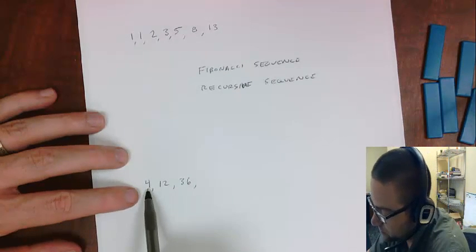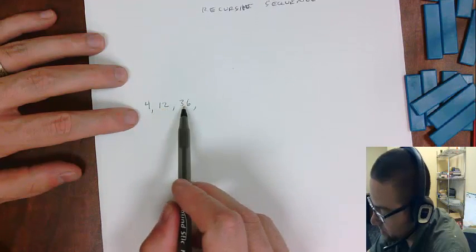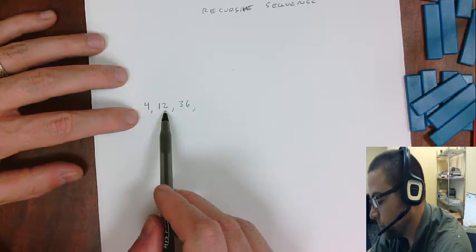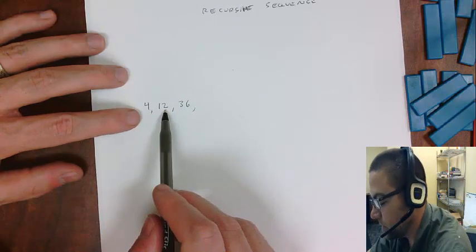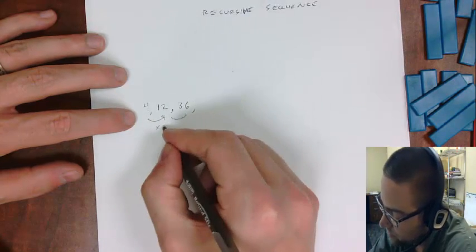So what happens here? So 4, what do I do to get to 12? So I'd have to add 8, but that doesn't work to there. So how about think about multiply. So 4 times 3 would get to 12. And then times, so this is a geometric, right? So times 3 times 3.